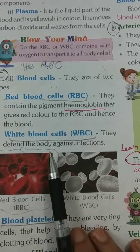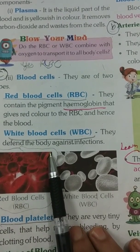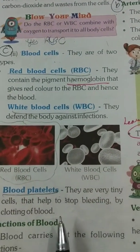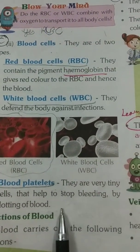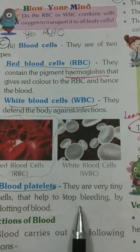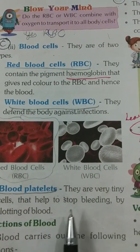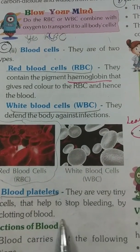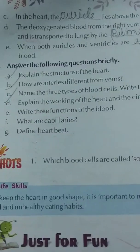White blood cells defend the body against infection. Blood platelets are very tiny cells that help to stop bleeding by clotting of blood.